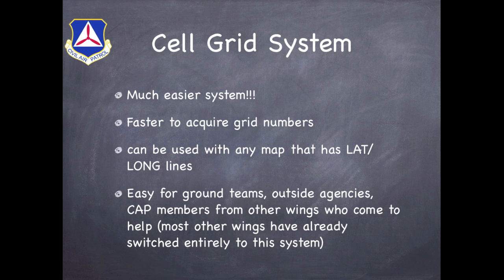So we'll come back to the CAPS standard grid with some examples in just a moment, but let's switch over to the cell grid system. This system is much easier to use because it's super fast to acquire the grids we're using, and we can use it on pretty much any map that has latitude and longitude lines on it — for example, sectionals, terminal area charts, WACs, Delormes, USGS Quadrangles — pretty much any map that has lat-long on it. Finally, it's also easy for ground teams, outside agencies, and CAP members from other wings who come out and help us.